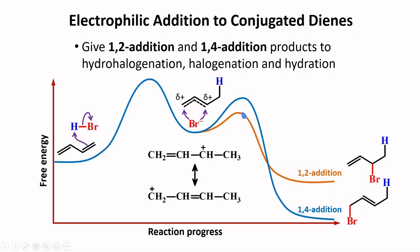Nevertheless, the energy of activation for the formation of the 1,2-addition product is lower compared to the energy of activation for the 1,4-addition product. The reason is the allylic carbocation: the allylic carbocation on a secondary carbon is more stable than the one on the primary position, so attack of bromine at the secondary position forming the 1,2-addition product has a lower energy of activation, resulting in a faster reaction.